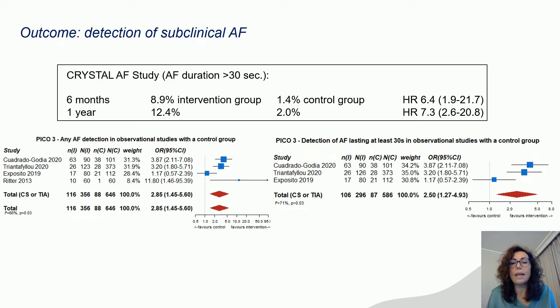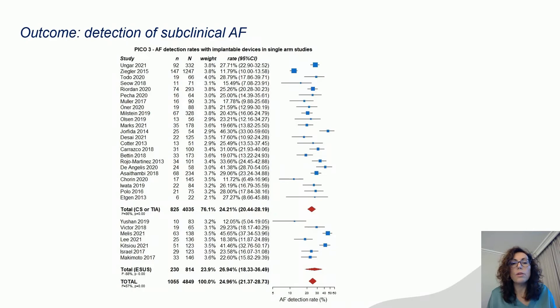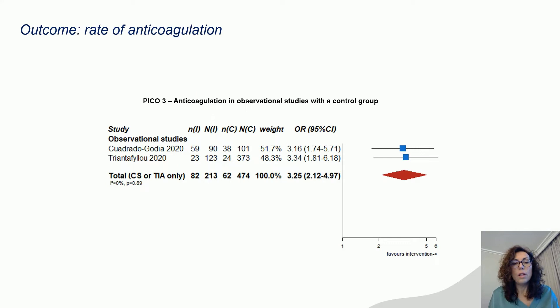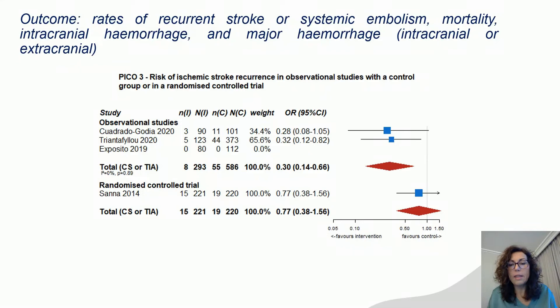This is also shown in observational studies with a control group. The rate of detection of subclinical AF with implantable devices in different single-arm studies is really high. Regarding anticoagulation, the rate with implantable monitoring devices is higher than that of controls, based on observational studies. However, we could not find a demonstration of a reduction in recurrent stroke, mortality, or any other clinical outcome based on the use of implantable devices.